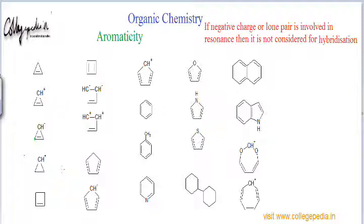Looking at the next intermediate, it will be anti-aromatic because again there are two carbon atoms which are sp3 hybridized. Whenever an sp3 hybridized carbon comes in a ring, it restricts the cyclic movement of pi electrons because that carbon does not possess a pure p orbital in which electron density can move in and out. So there is no resonance across an sp3 carbon atom.